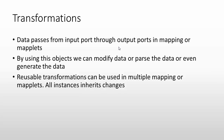Transformation is one of the most granular components in a mapping. It is used to transform data — for example, using an uppercase transformation to capitalize data. There are several transformations available. Data passes from an input port through an output port in a mapping or maplet; moving data from source to target through ports is done via transformation. Using these objects we can modify, pass, or even generate data. Reusable transformations can be used in multiple mappings or maplets, and all instances inherit changes made to the reusable transformation.